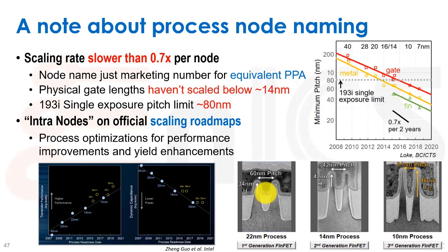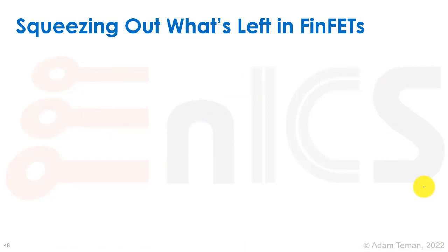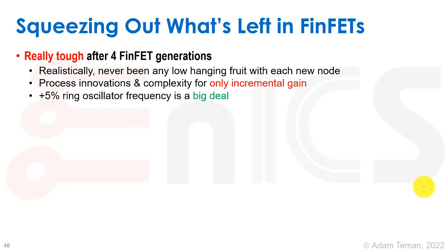You can see how the pitches of the 22, 14, and 10 nanometer processes have gone down, but the gate length pretty much stays the same. The next step is squeezing out what's left in FinFETs. This is really tough after four FinFET generations. Realistically, there's never been any low-hanging fruit with each new node — we just really try to do all these different process innovations, which are pretty amazing that process engineers are able to do them.